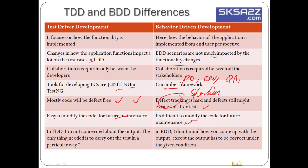In TDD, the focus is on carrying out the test in a particular way — not primarily concerned about whether the output is correct. In BDD, you don't mind how you arrive at the output, except the output has to be correct under the given conditions. This means BDD checks from the end user's perspective — the product has to be right.